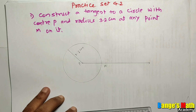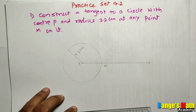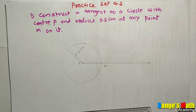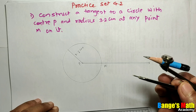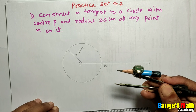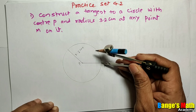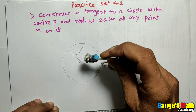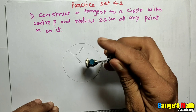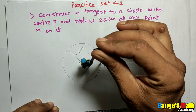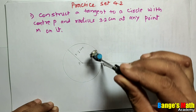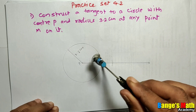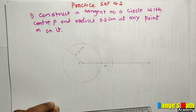We have to draw a tangent at point M. So, take a suitable distance in your compass, put the still point on point M, and draw arcs to the left and right side of point M intersecting ray PM.